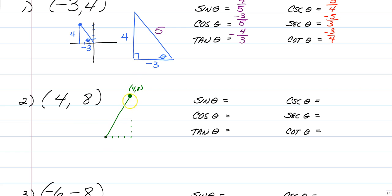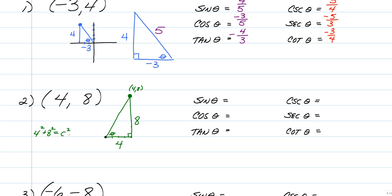Our right triangle is going to look like this. Here's our right angle, and of course theta is by the origin. Our horizontal x direction is 4, and our vertical direction is 8. So we're going to have to do the Pythagorean theorem here. This one will work out a little bit differently so you feel a little more comfortable. We're going to have 4 squared plus 8 squared is equal to c squared.